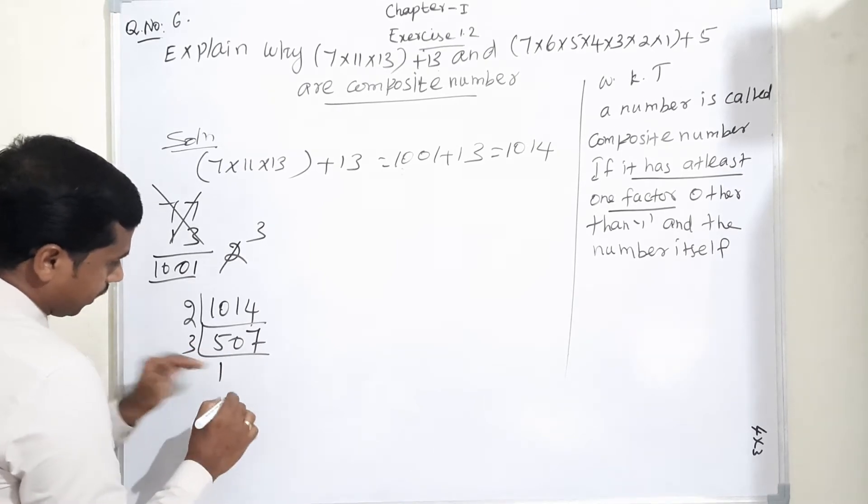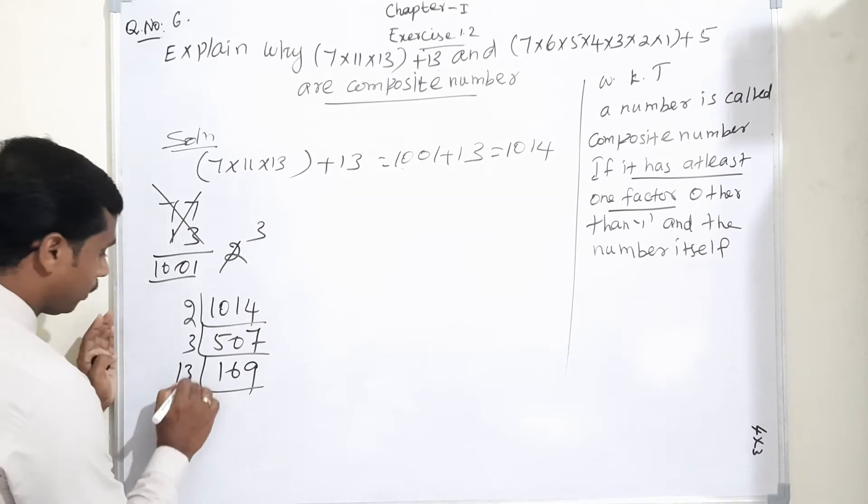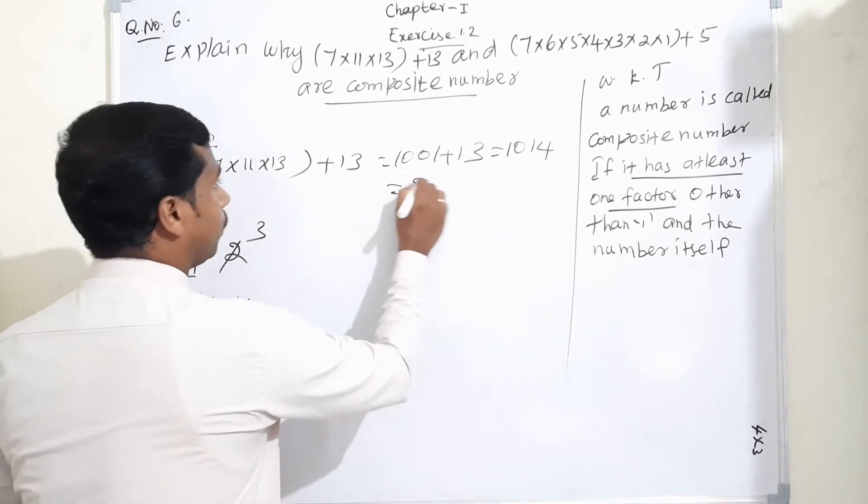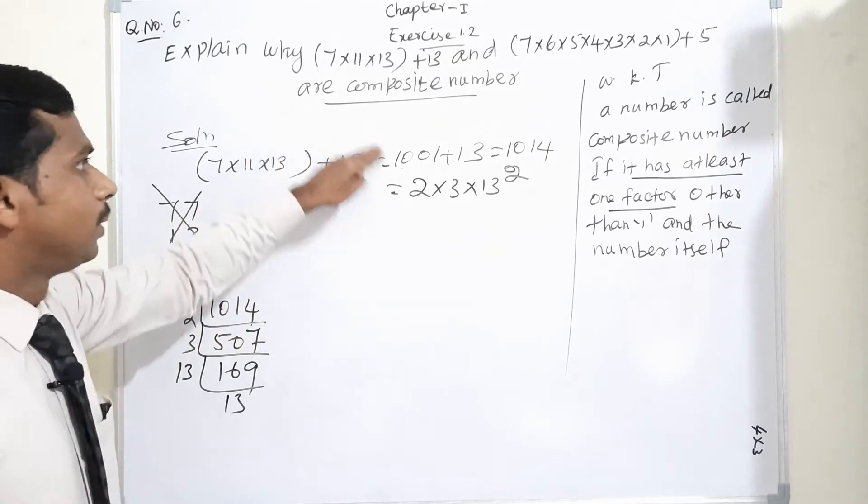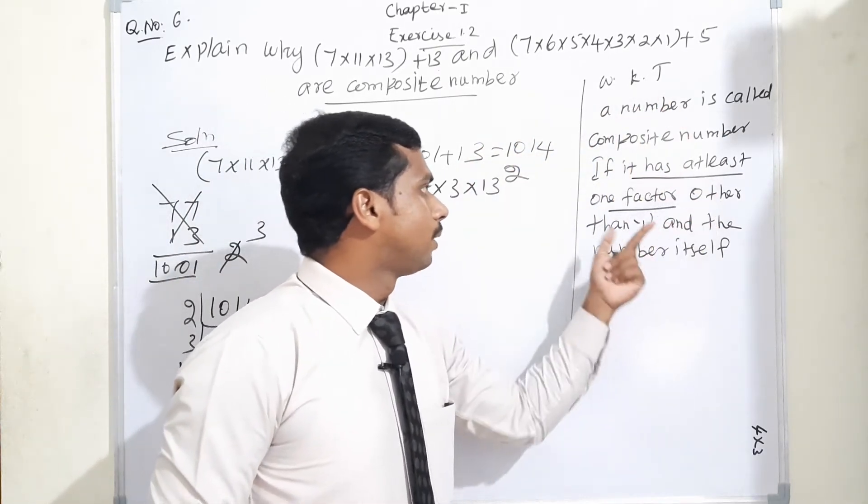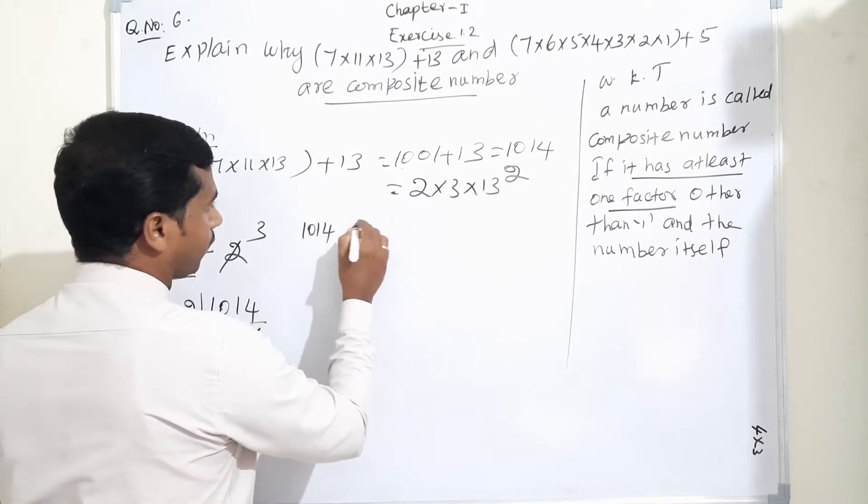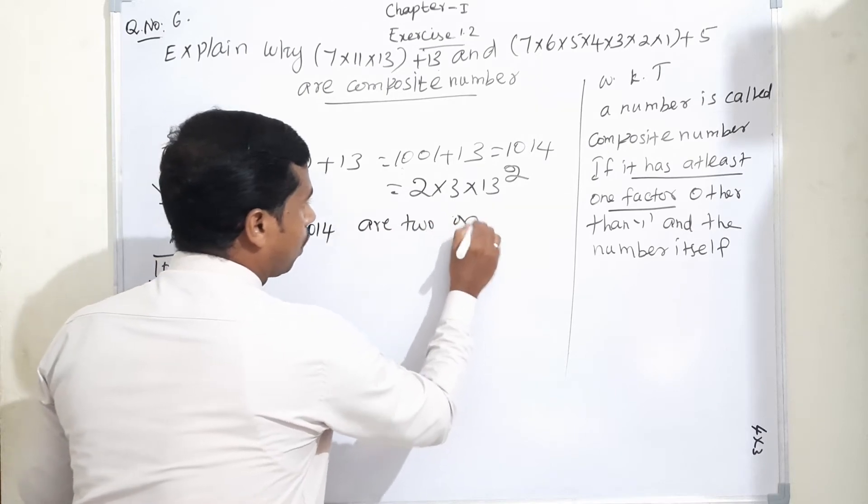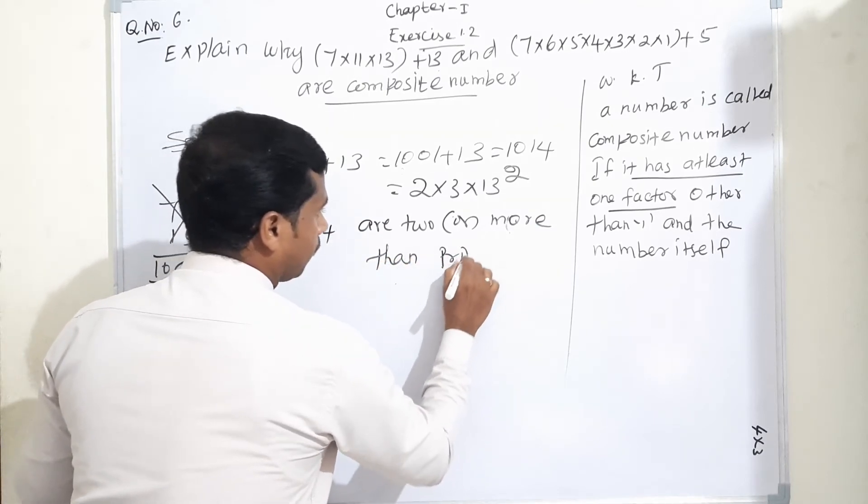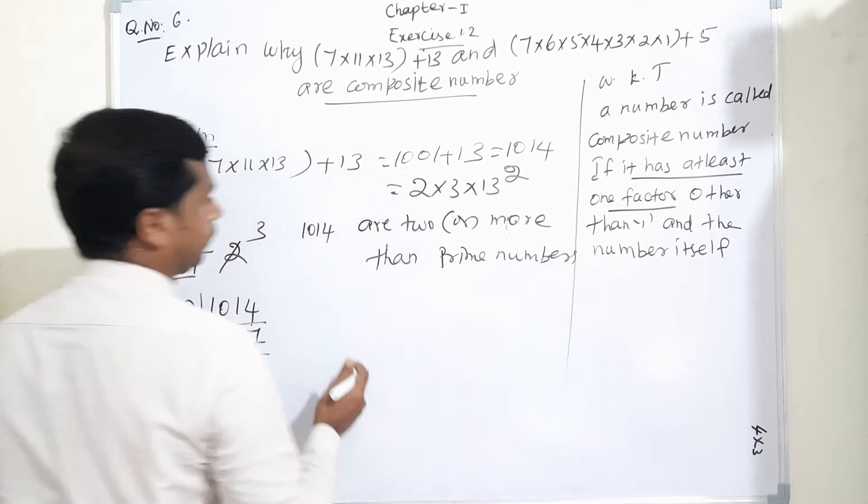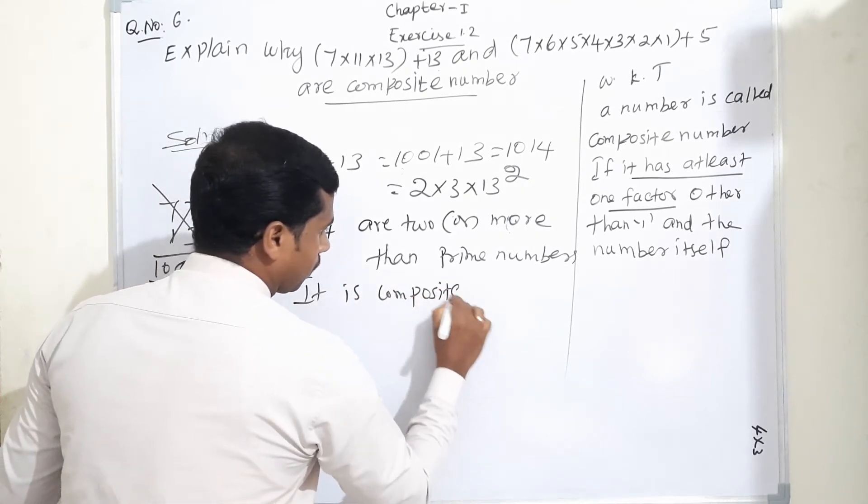169 we can say is the perfect square of 13, so 13×13. Therefore, 1014 equals 2×3×13×13 or 13 squared. So our composite number, you know what is the meaning of composite number - if it has at least one factor other than 1. Here, 1014 has more than one prime factor. That is why we can say it is a composite number.